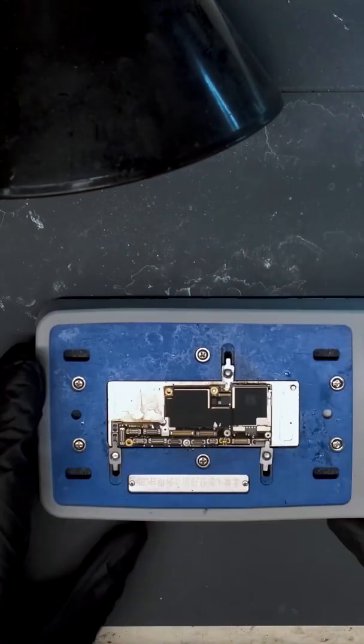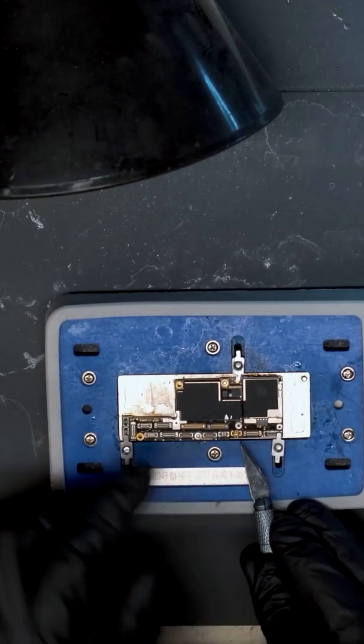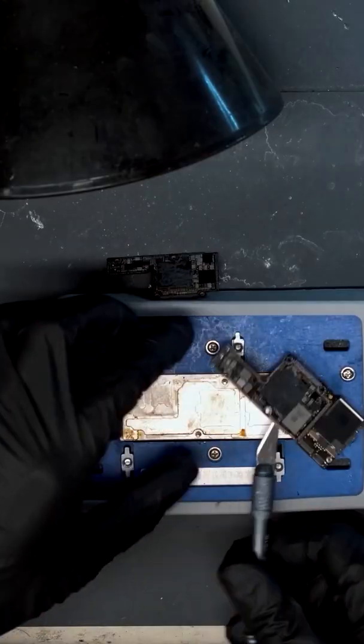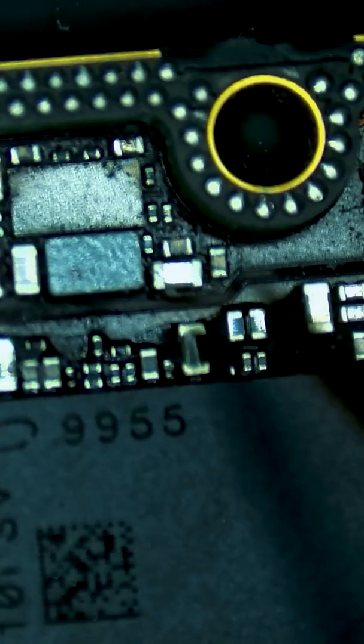Since the iPhone XS is a sandwich board design, we must separate the two layers in order to isolate the problem. We confirm that the short is coming from the bottom board, also known as the RF board.